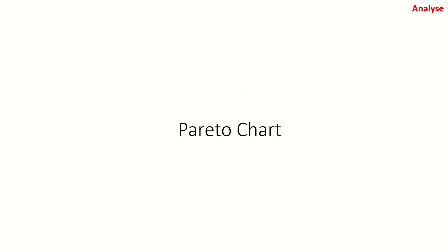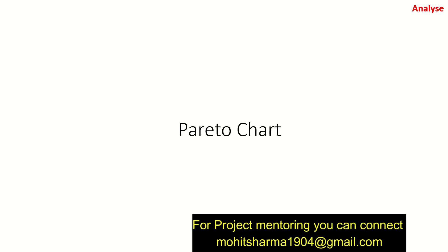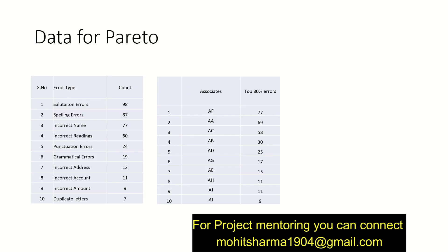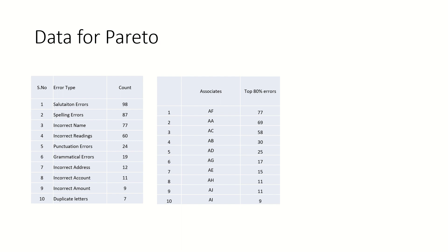Now comes the Analyze phase. In the Analyze phase, the most common tool that can be used in a yellow belt kind of project is a Pareto chart. A Pareto chart works on the Pareto principle, also known as the 80-20 rule: roughly 80% of the effects come from 20% of the causes. There are errors being made in the process — salutation errors, spelling errors, incorrect name, incorrect readings — we have 10 error types. Against them we have written the count of errors in each error type for the last six months. We are going to create a Pareto chart and understand which are the top 80% contributing error types.